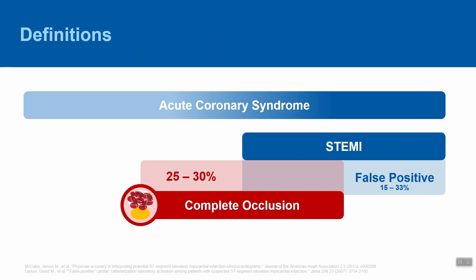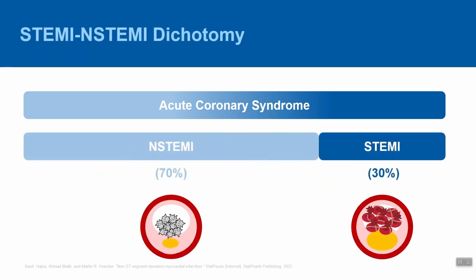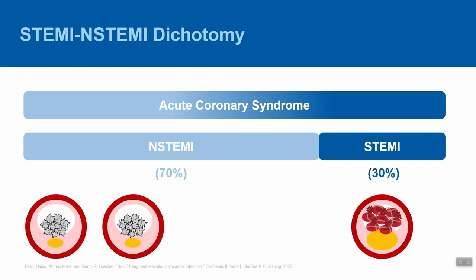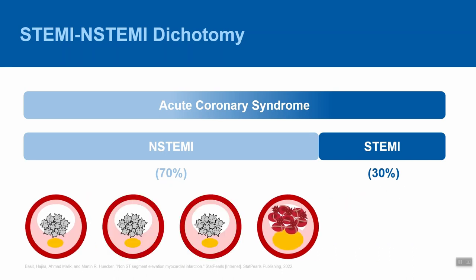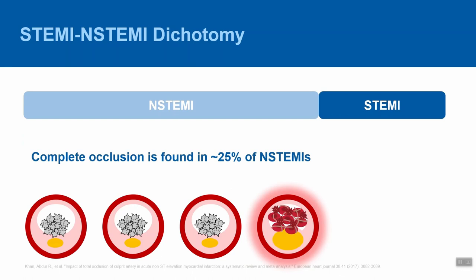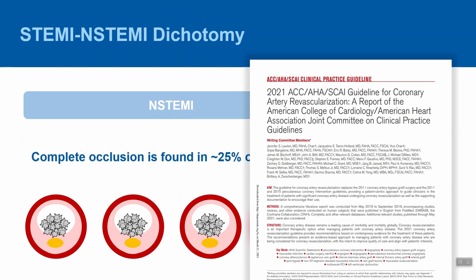In reality, these STEMI patterns are associated with a roughly 15–30% false positive rate and miss 25–30% of acute thrombotic occlusions. NSTEMIs account for about 70% of acute coronary syndromes, while STEMIs account for the remaining 30%. About one in four NSTEMIs are found to have total thrombotic occlusion at the time of cath. Under the STEMI-NSTEMI paradigm, the latest guidelines do not provide guidance on how to identify this subgroup of NSTEMIs.